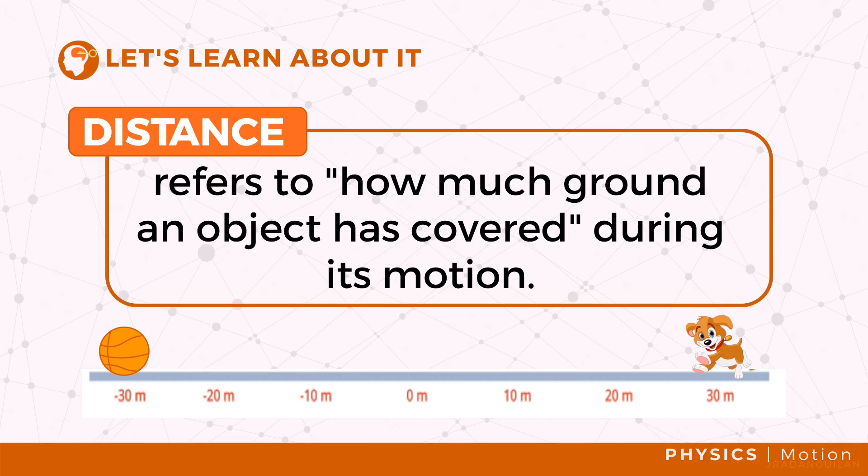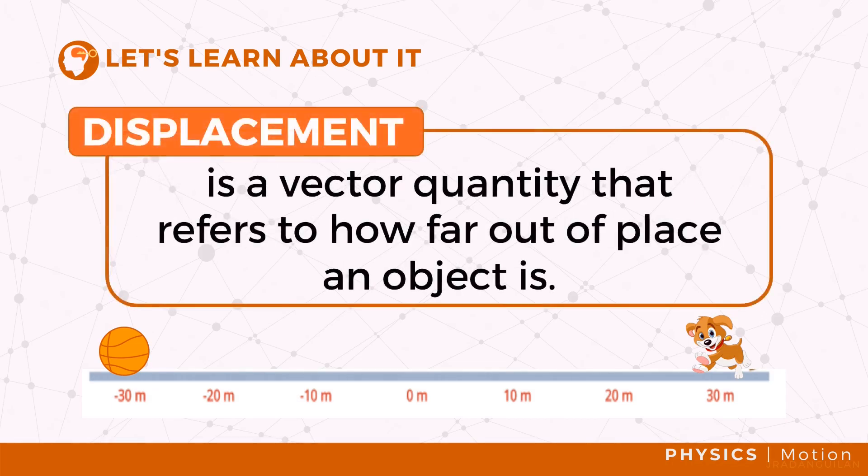Distance is measured in meters and it is also referred to as how much ground an object has covered during its motion. Displacement is known as the distance with direction. It is a vector quantity which includes both the magnitude and the direction. It refers to how far out of place an object is.